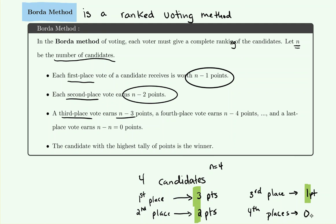Fourth place would be zero points because four minus four equals zero. One way to check that you're distributing points correctly: if you have four candidates, fourth place should be zero points, third place one, second place two, and first place three. After distributing all points, you add up each candidate's total, and whoever has the highest point value is the winner.